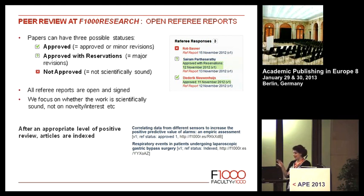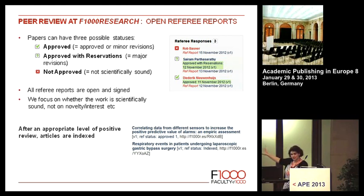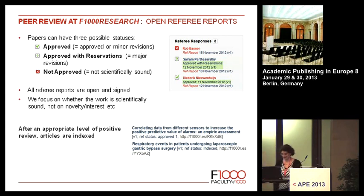One of the key things we've had to look at very differently is indexing and citation. We've been working with PubMed, PubMed Central, Scopus, and Embase, and we've agreed with them all an appropriate level of refereeing at which we then send articles for indexing — which is a real incentive for authors to revise their manuscripts. We've also changed the way articles are cited: within citations, we include the version number and the referee status at that time, plus a shortened URL which takes you to the current referee status, so anyone citing something in a grant or CV can always see the current status.